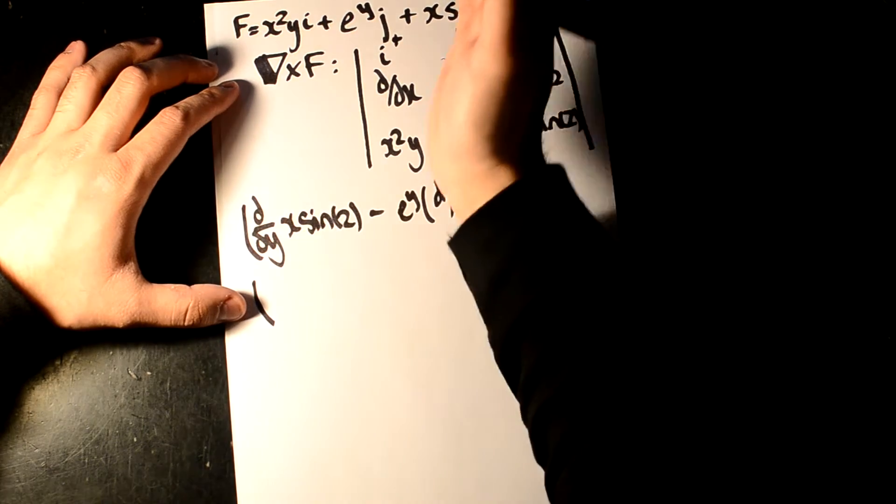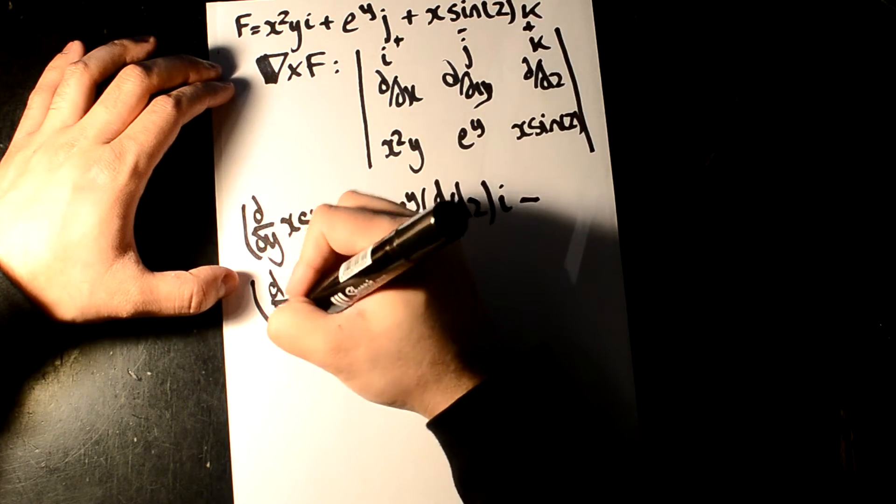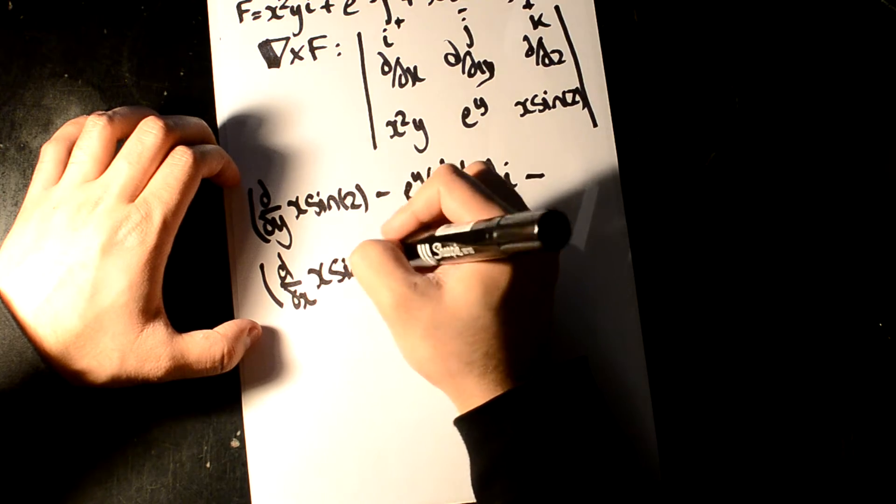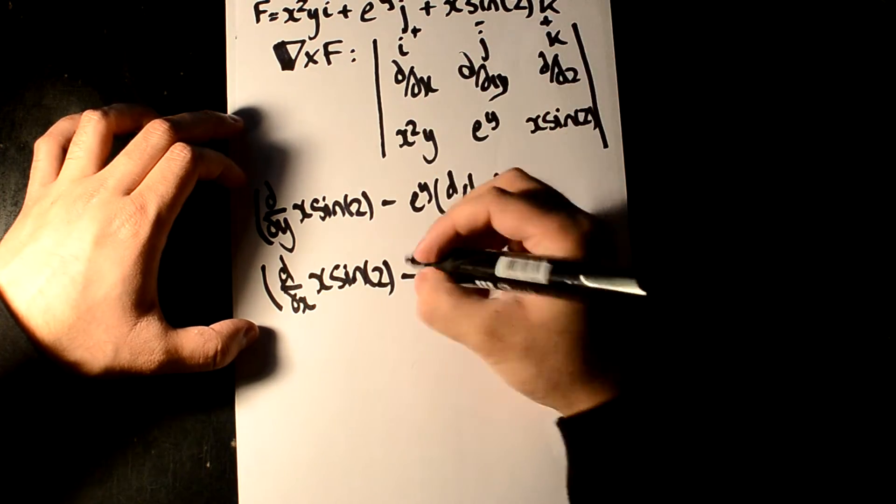Minus, cover the j term, d over dx times x sine z, d over dx, x sine z, minus d over dz, x squared y.